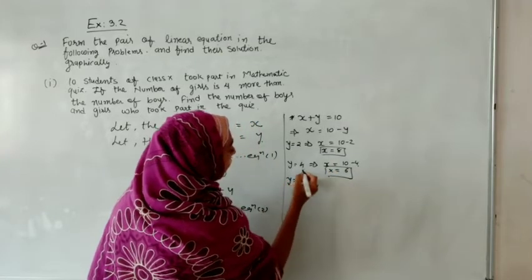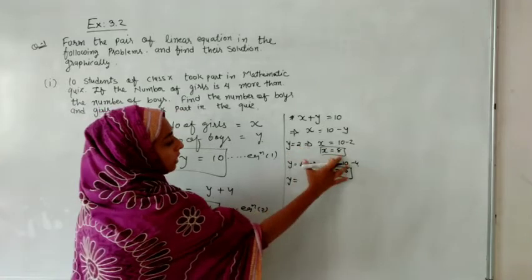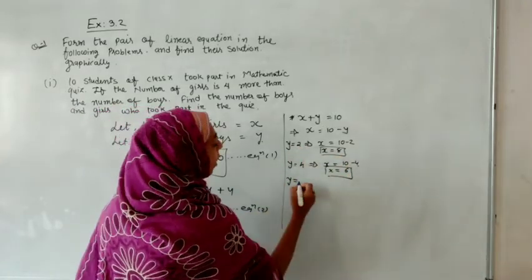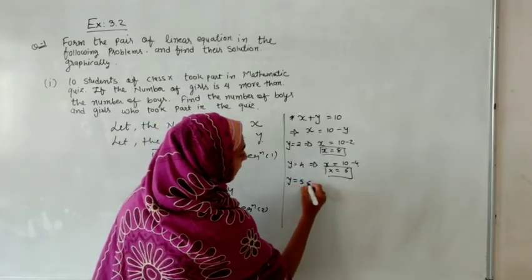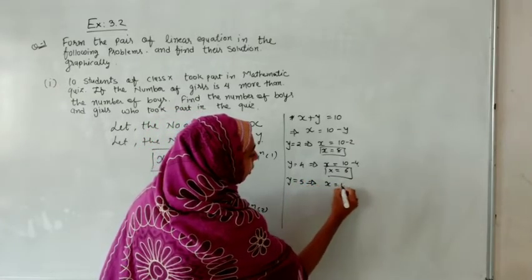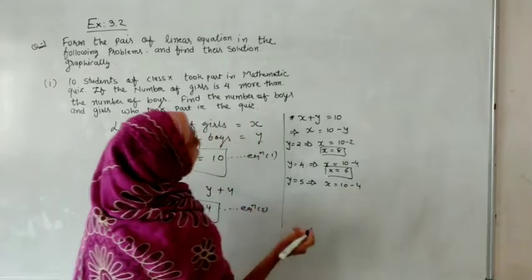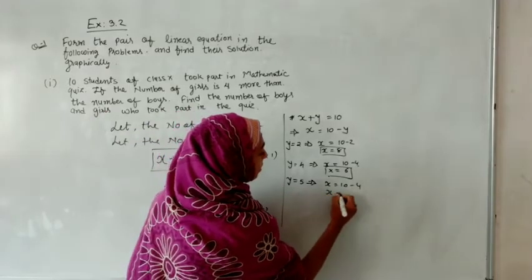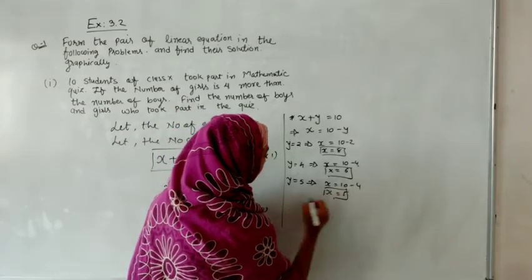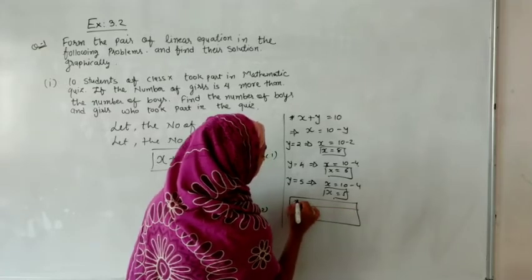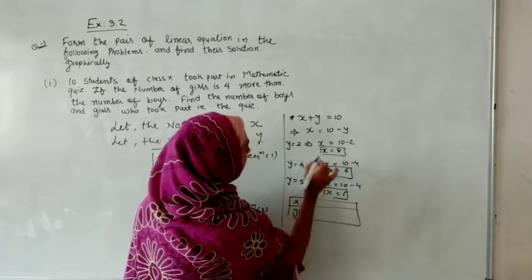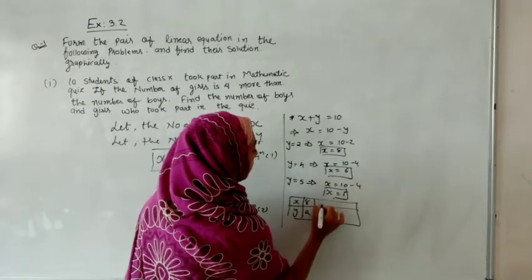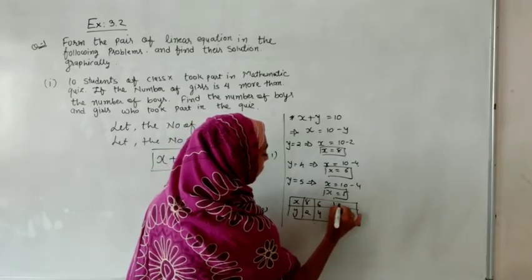And the third solution: if y equals 5 then x equals 5 as well. So the table of values for equation 1 is: x = 8 when y = 2; x = 6 when y = 4; x = 5 when y = 5.